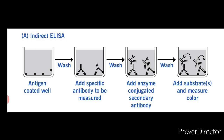Indirect ELISA is the method of choice to detect the presence of serum antibodies against human immunodeficiency virus (HIV), the causative agent of AIDS. In this assay, recombinant envelope and core proteins of HIV are adsorbed as solid-phase antigens to microtiter wells. Individuals infected with HIV will produce serum antibodies to epitopes on these viral proteins. Generally, serum antibodies to HIV can be detected by indirect ELISA within six weeks of infection.